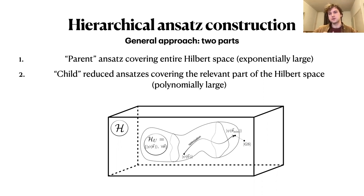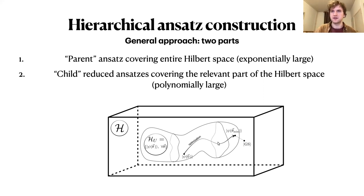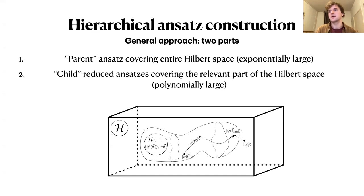Of course the full ansatz will be exponentially large with exponentially many parameters. The next step is a reduction scheme that, given a Hamiltonian, tells you which gates from the ansatz are most relevant. Hopefully there is a match between this template parent ansatz — which covers the entire Hilbert space — and the capacity of choosing specific parameters theta to get close to the ground state after optimization.